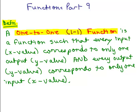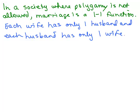I'm going to talk about one-to-one functions in broad terms to begin with. One example is the marriage function. Think of a society where polygamy is not allowed — we'd say marriage is a one-to-one function, because each wife has only one husband, and each husband has only one wife.